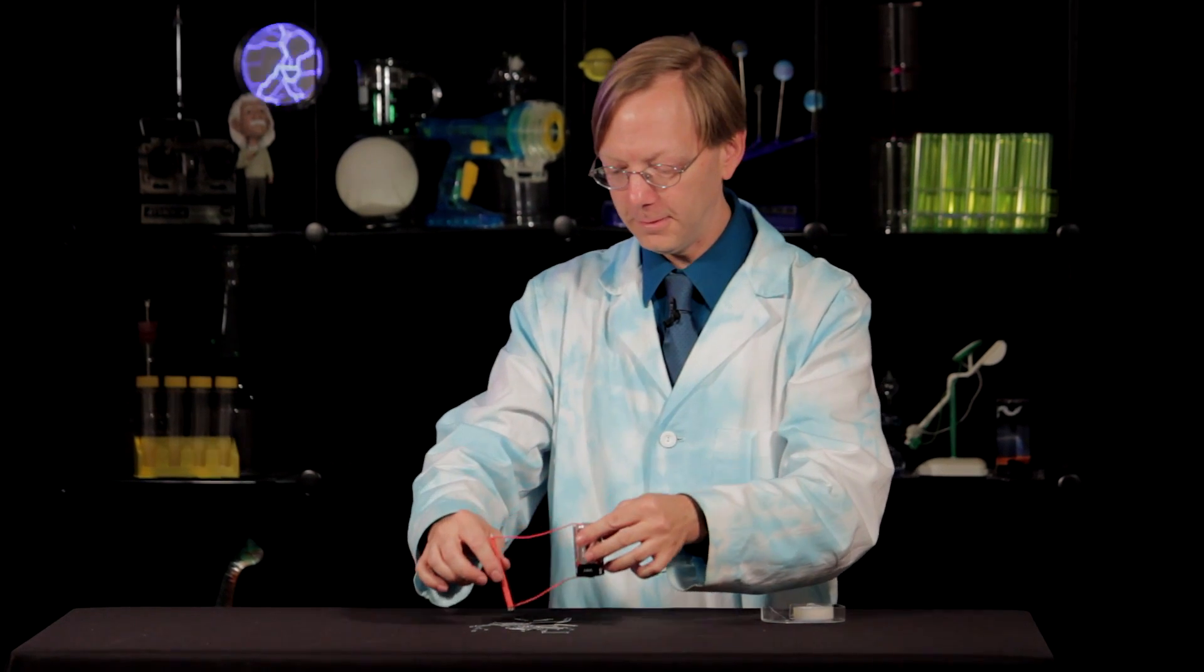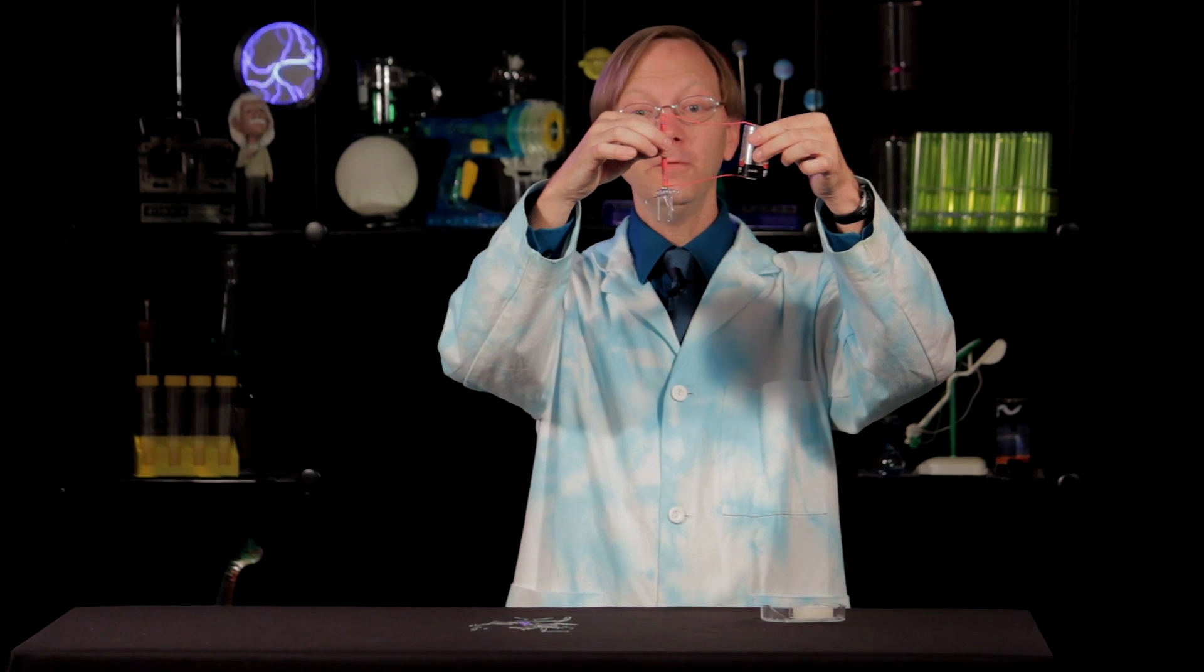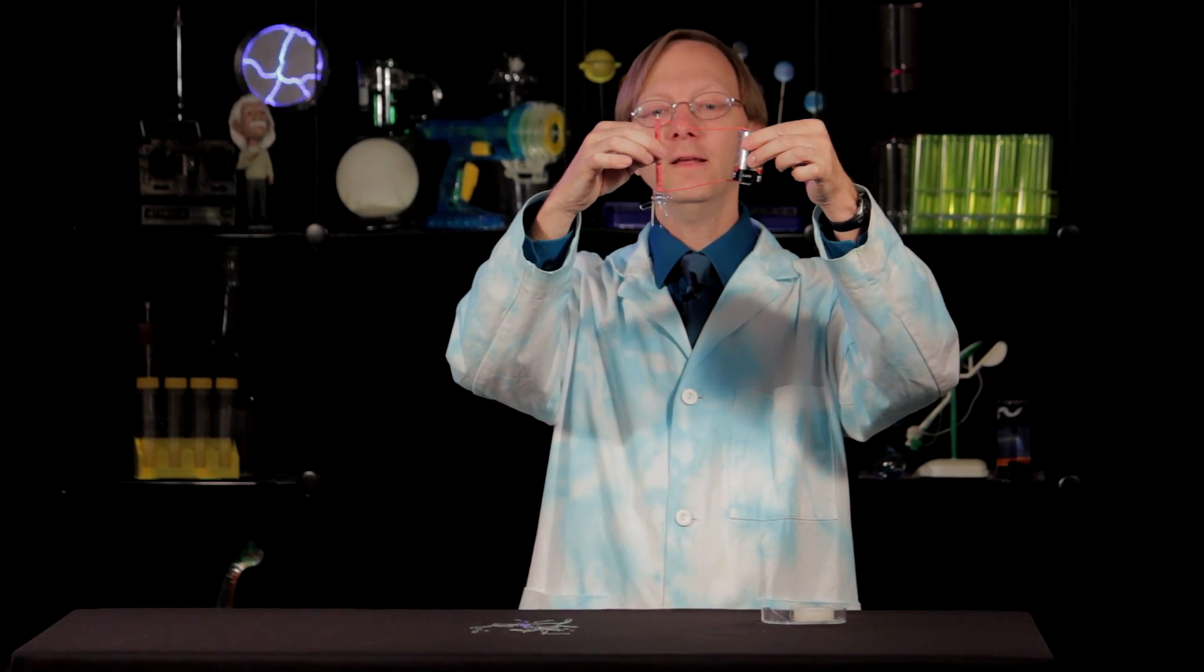Now believe it or not, you've just created an electromagnet. Watch what happens when we bring it close to the paper clips. You see, as the electricity flows around the wire, it creates a magnetic field in the nail, and you get to pick objects up. Just the way Nick and Tesla did.